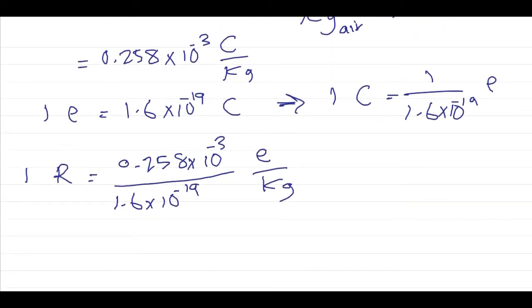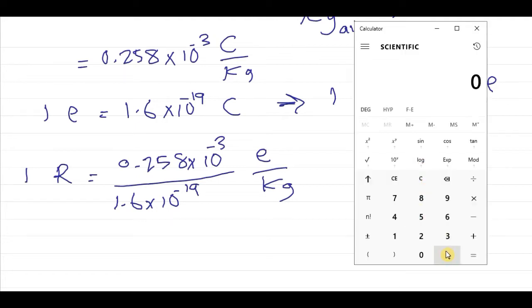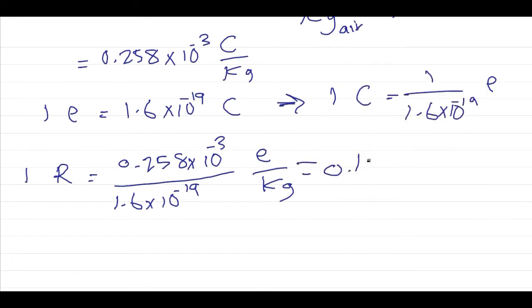Let's calculate this. We divide 0.258 by 1.6, we get 0.16125. This equals 1.6125 times 10 to the 15 electrons per kilogram.